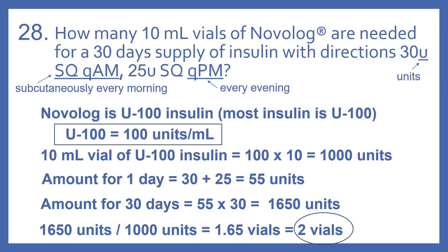The amount for one day — we need to calculate that. So 30 units subcutaneously every morning and 25 units subcutaneously every evening. So 30 plus 25, that would be a total of 55 units for one day.